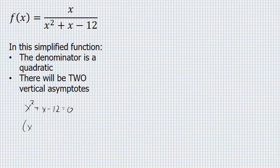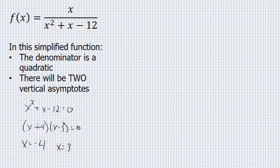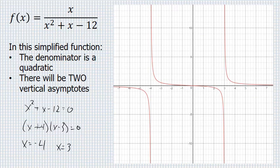This factors to x plus 4 times x minus 3 equals 0. There will be two vertical asymptotes, one at x equals negative 4, and one at x equals 3.